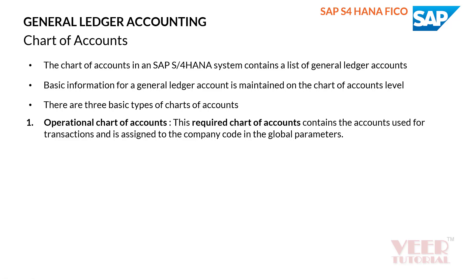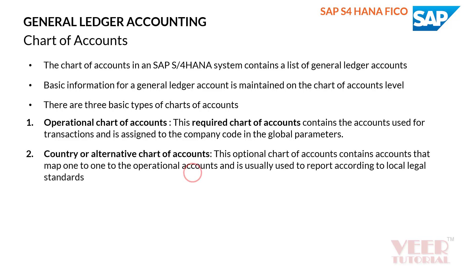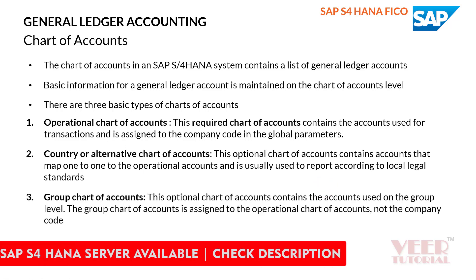We can also define one chart of accounts for all company codes — it totally depends on the business requirement. The second type is the country or alternative chart of accounts. This is optional and contains GL accounts that map one-to-one to the operational chart of accounts. It is usually used to report according to local legal standards.